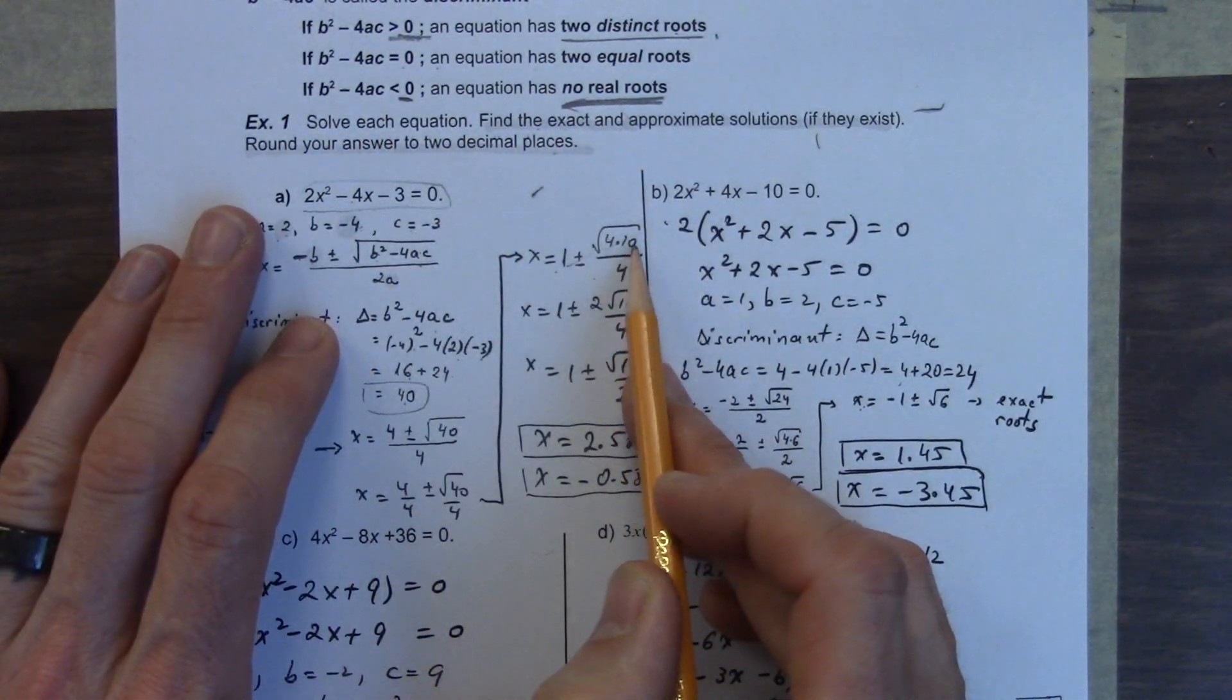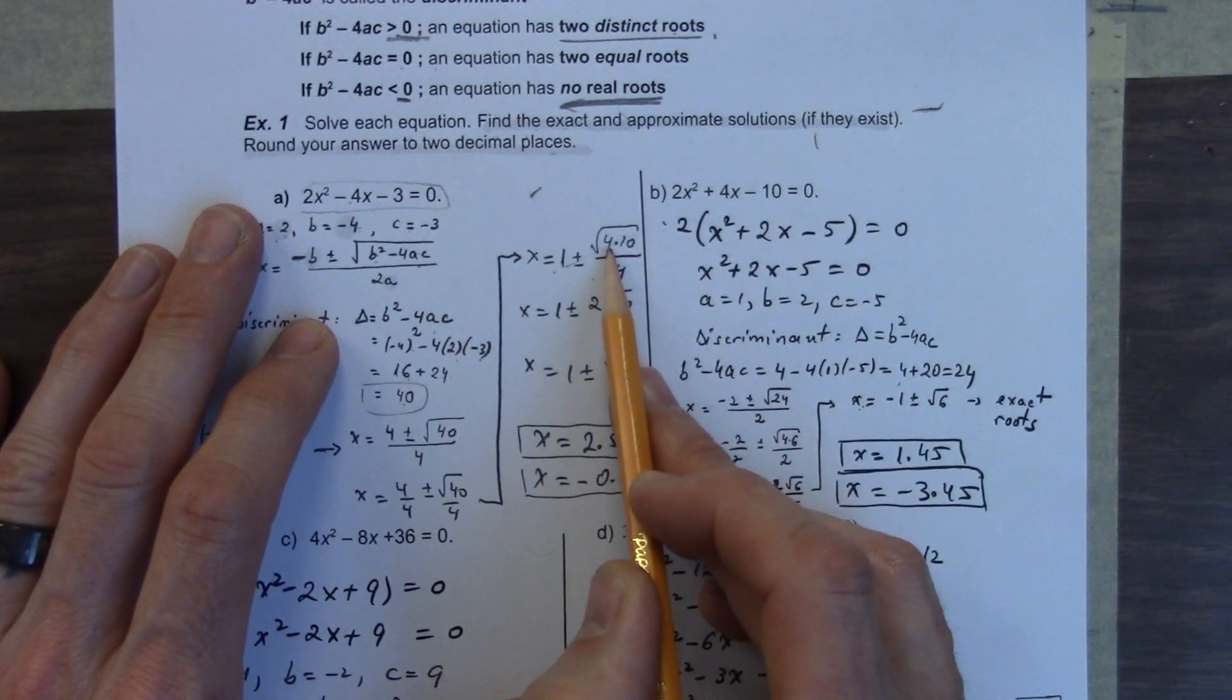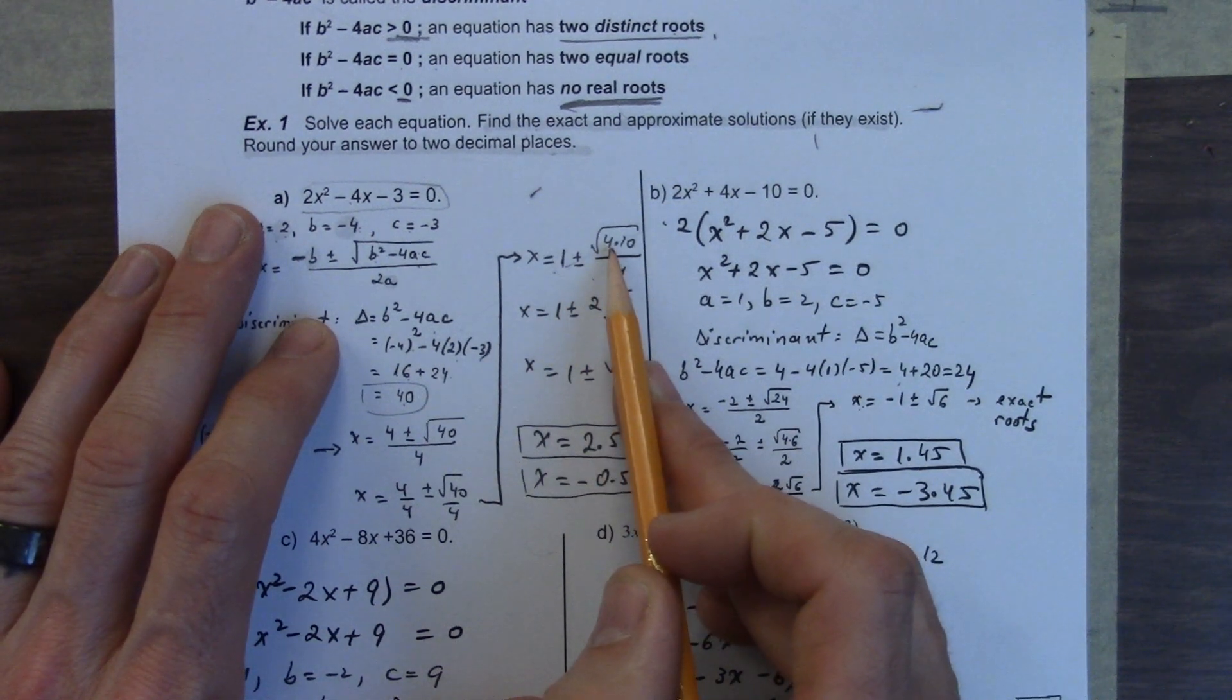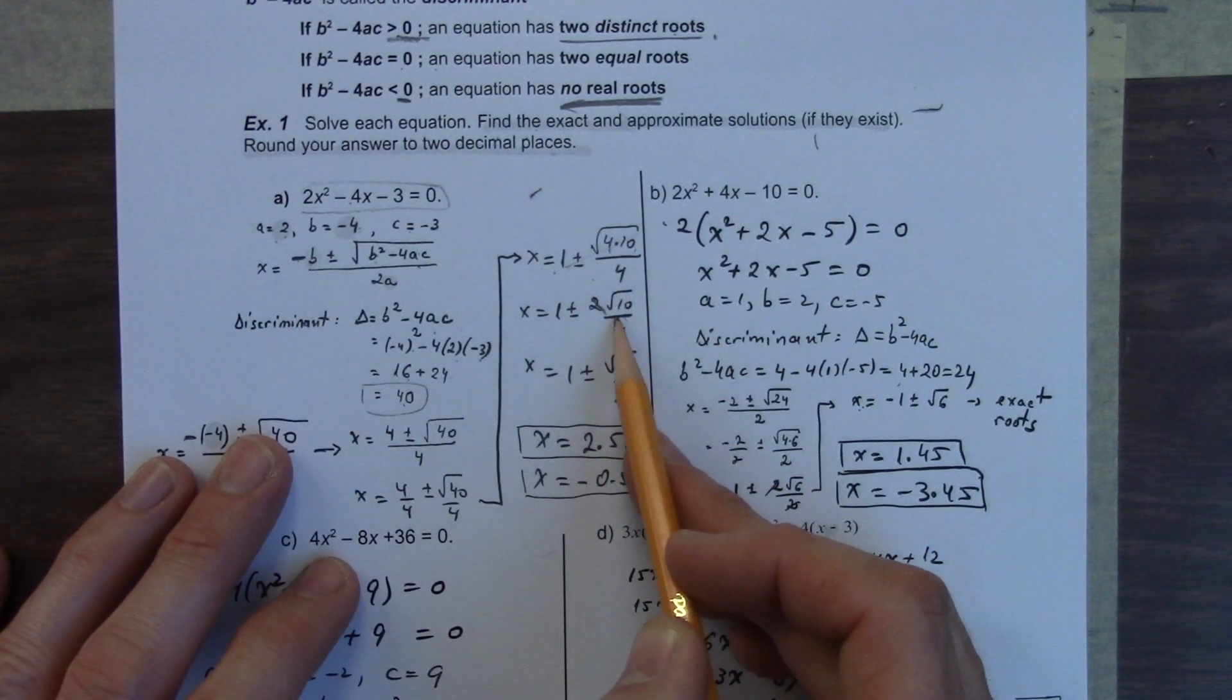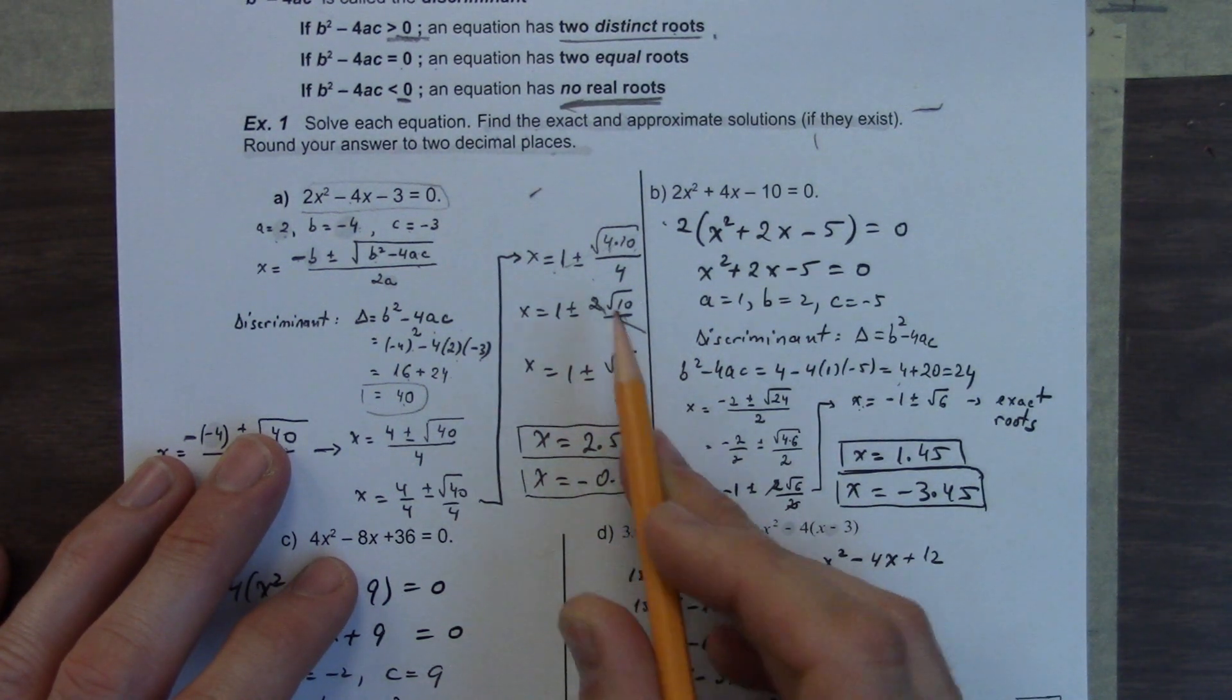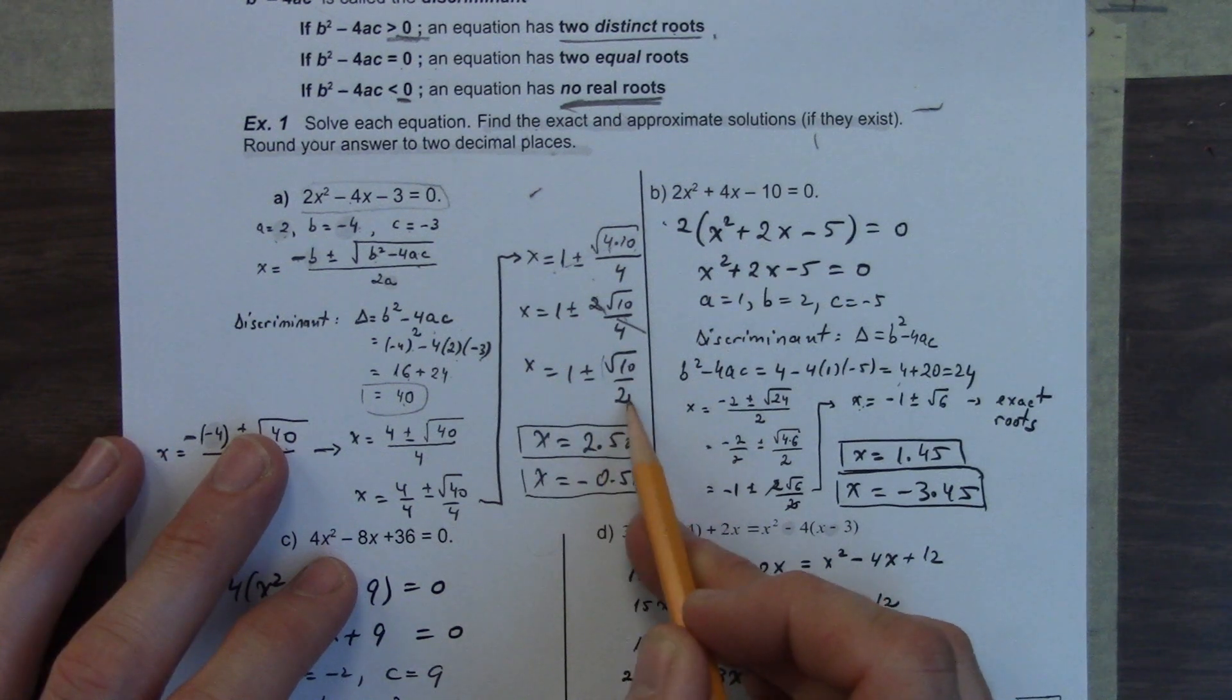We can then continue along here. Square root of 40 is 4 times 10, so if you rewrite it like this, you can take the square root of the 4 out of the bracket. The square root of 4 is 2. And you're left with the 10 on the inside of the bracket. And the reason we do that is because then we can divide the 2 into the 4. We get a 2 on the bottom. The 2 on the top becomes 1. We're left with 1 plus or minus root 10 over 2.